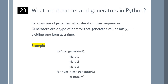What are iterators and generators in Python? Iterators are objects that allow iteration over sequences. Generators are a type of iterator that generates values lazily, yielding one item at a time. You can refer to the example shown on the screen.